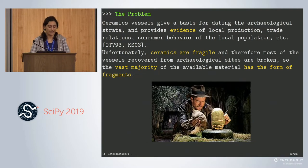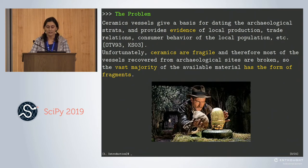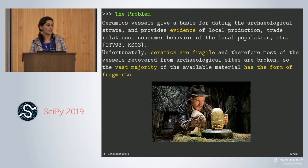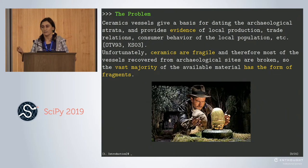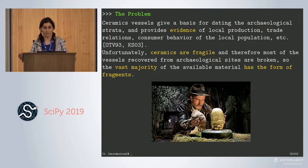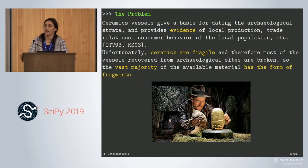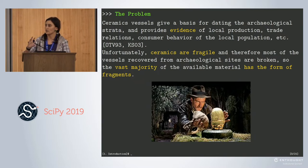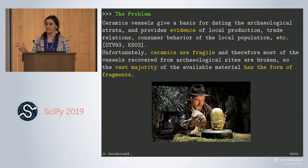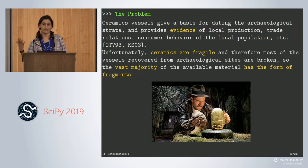The problem is that ceramic vessels are super helpful for dating archaeological strata, provide evidence on how communities worked at an economical and cultural level, and show the relationships between different cities. This is super helpful for archaeology studies, but unfortunately these ceramics are super fragile. Therefore most of the vessels that archaeologists recover are broken, so they have to deal with a lot of fragment information.